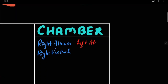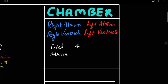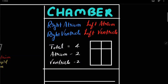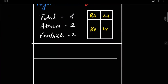To sum up the chambers: on the right side you have your right atrium and right ventricle, and on the left side you have left atrium and left ventricle — so total chambers are four: two atria and two ventricles. You can understand this easily by the box diagram. Now we will discuss about the valves.